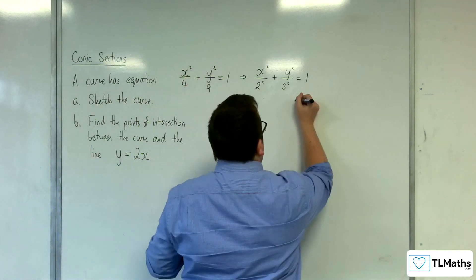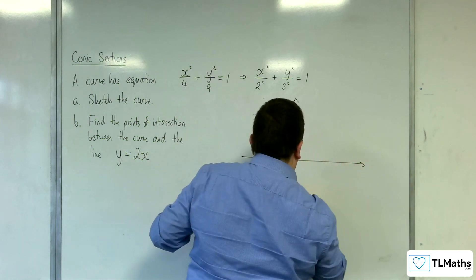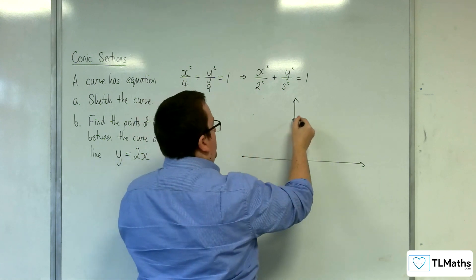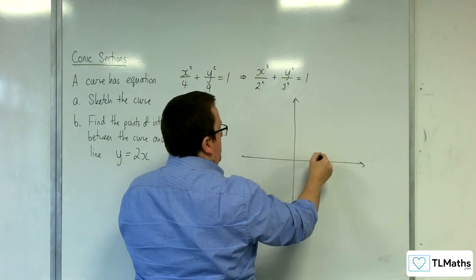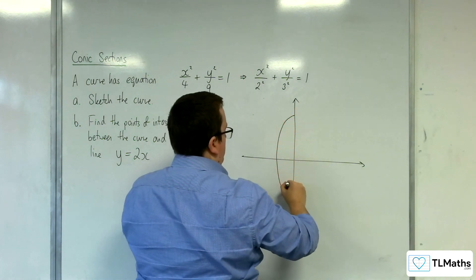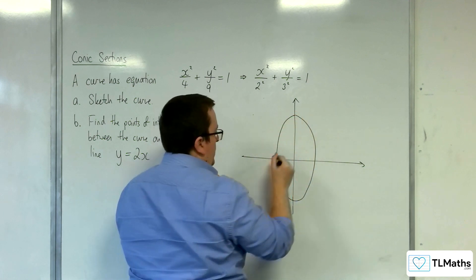So either way, we know that it's going between minus 3 and positive 3 and minus 2 and positive 2. So it's going to look something like that, quite accentuated there.